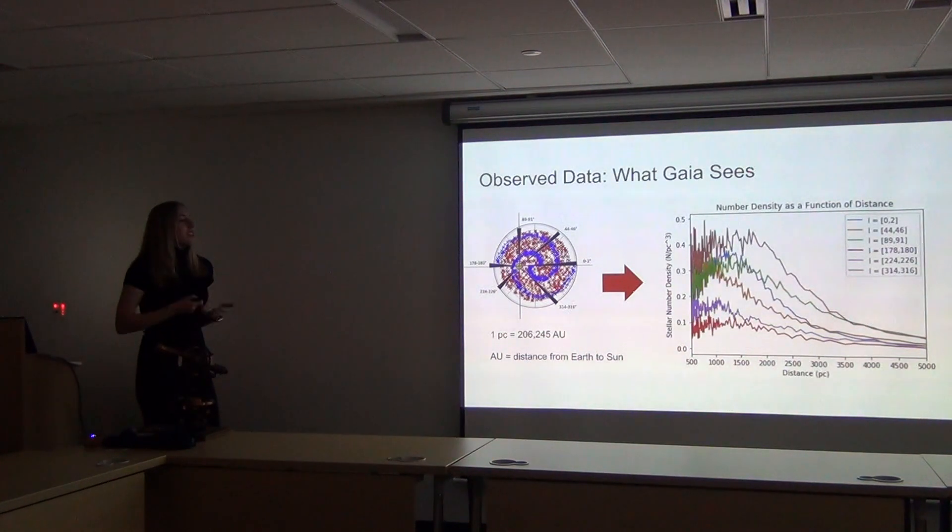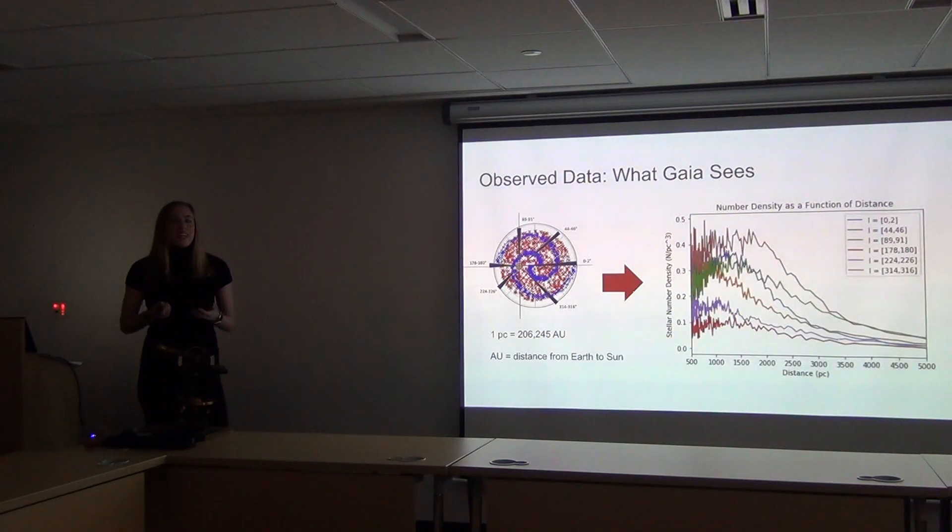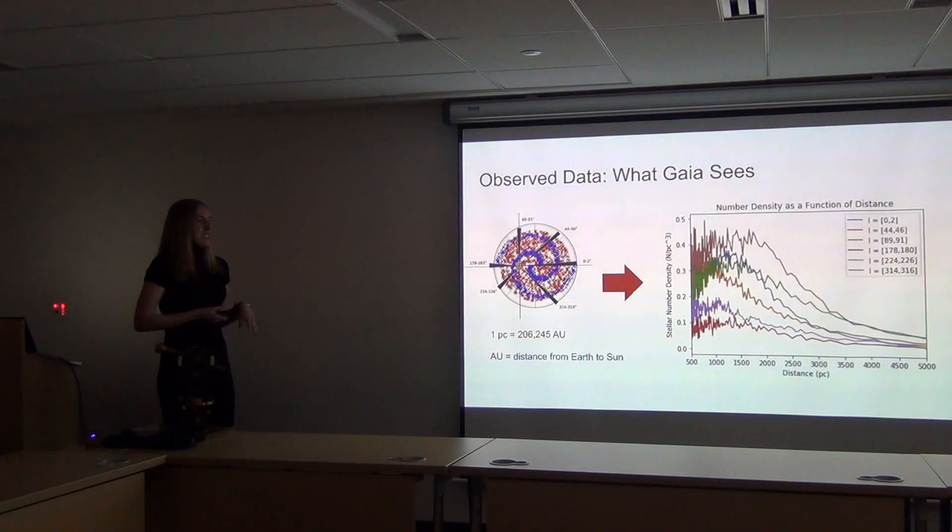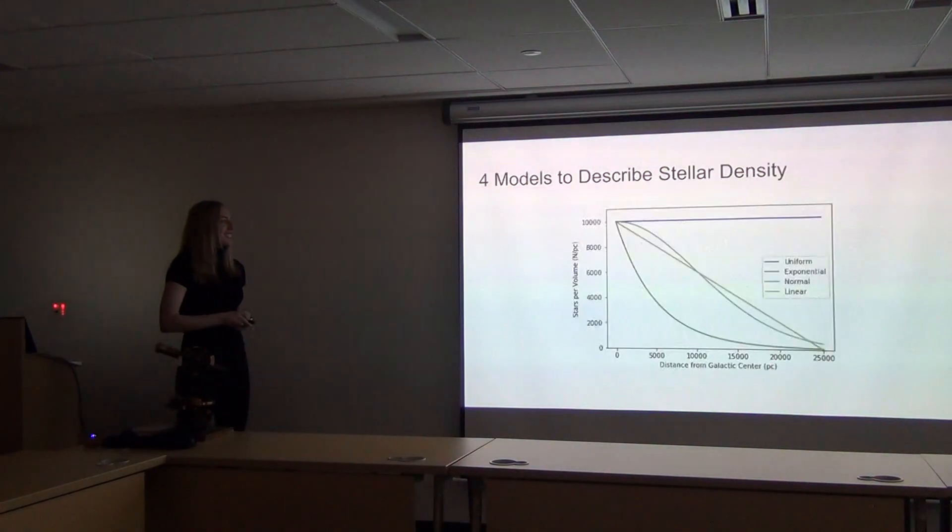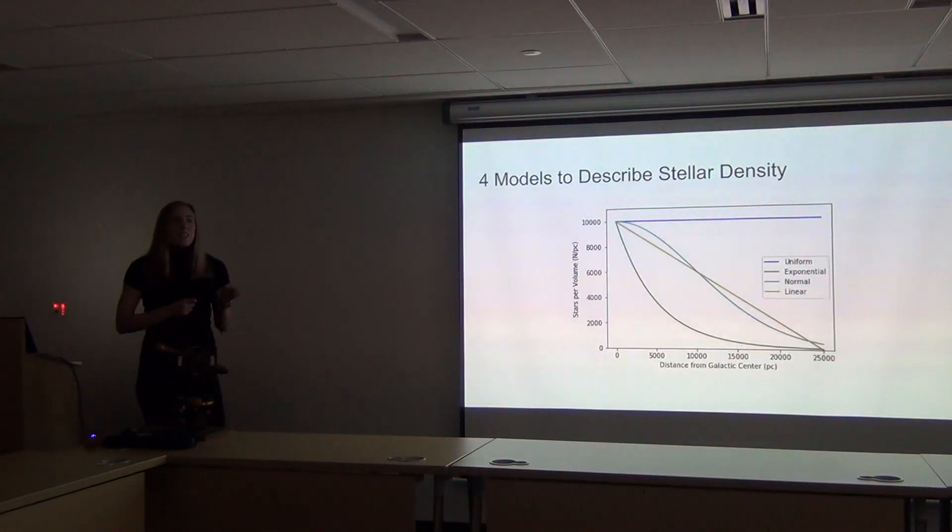And then an interesting thing is the highest one, this brown right here. That is this angle at 314 degrees, which we didn't really expect that. We would think the highest would be leaning towards the galactic center. So that could be for a number of things. We think maybe a spiral arm could be a cool explanation.